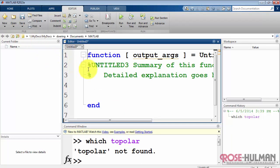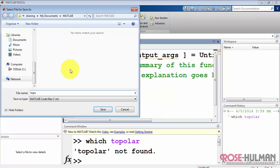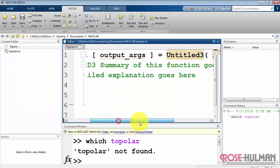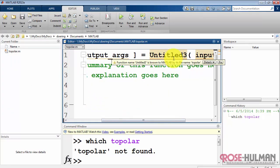So I'll create a new function, new function template. Save that away as toPolar. It's also an M file like a script, but a function behaves a little bit differently, as we will see.